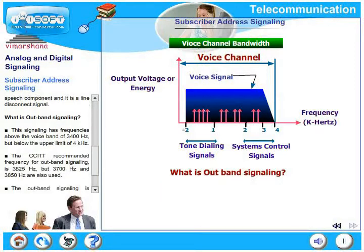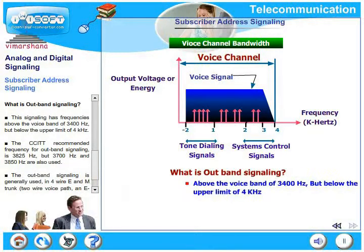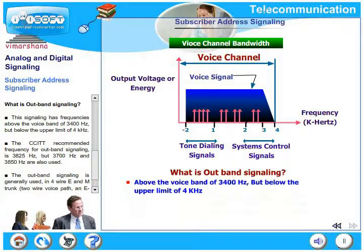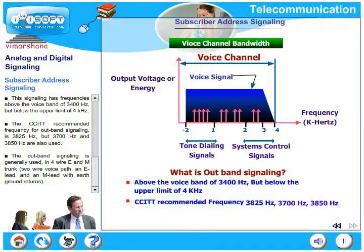Out-of-band signaling has frequencies above the voice band of 3400 hertz but below 4000 hertz. CCIT recommended frequencies are 3825 hertz, but 3700 hertz and 3850 hertz are also being used.